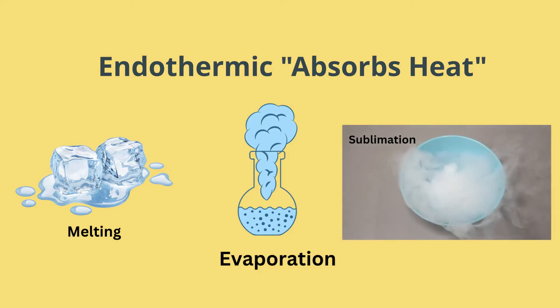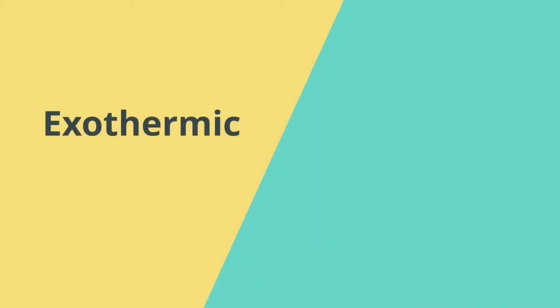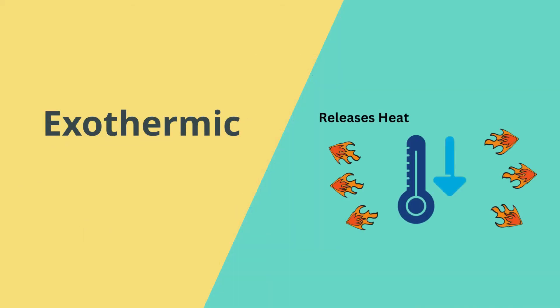An exothermic phase change is a phase change that releases heat to the surroundings. This means that the temperature of the surroundings will increase as the substance undergoes the phase change.